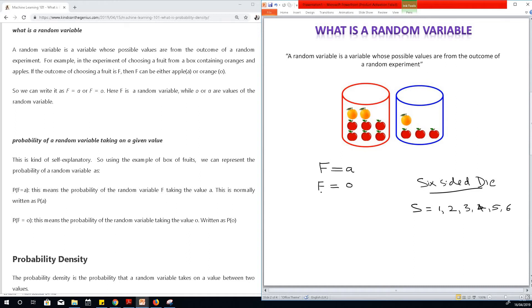So in this case, f is a random variable, and a and o are possible values it can take. In this case, s is a random variable, and the possible values could be 1, 2, 3, 4, 5, 6. So I hope you understand this very clearly.